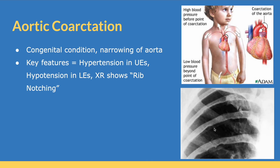If you look at the bottom right picture — this x-ray — you can see rib notching right over here, and these findings are very representative of aortic coarctation.